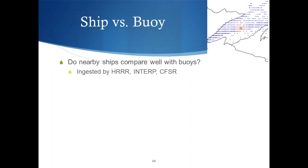I'll start with ship versus buoy. We wanted to know: do nearby ships compare well with buoys? One of the reasons is because HRRR, interpolated meteorology, and CFSR all ingest buoy data. So we figured if the ships don't agree well with buoys, they probably won't agree well with any of these other sources. Also, buoys are a good source of open water observations, so it's nice to compare for ships, which are also open water.